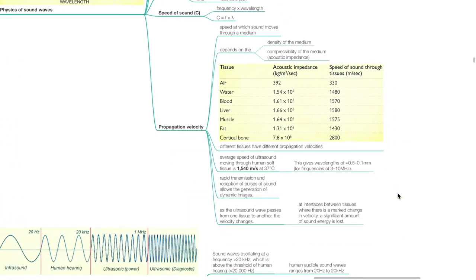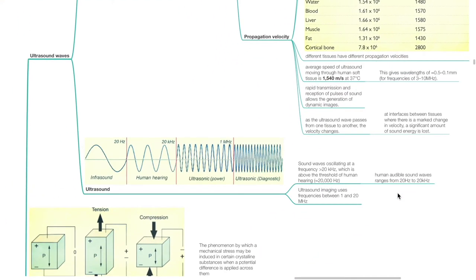Propagation velocity is the speed at which sound moves through a medium and depends on the density and compressibility of the medium, i.e., acoustic impedance. Different tissues have different propagation velocities. The average speed of ultrasound moving through human soft tissue is 1,540 meters per second at 37 degrees Celsius. This gives wavelengths of 0.5 to 0.1 millimeter for frequencies of 3 to 10 megahertz. Rapid transmission and reception of pulses of sound allows generation of dynamic images. Ultrasound waves oscillate at a frequency of more than 20 kilohertz, above the threshold of human hearing. The range of audible sound for humans is 20 hertz to 20 kilohertz.